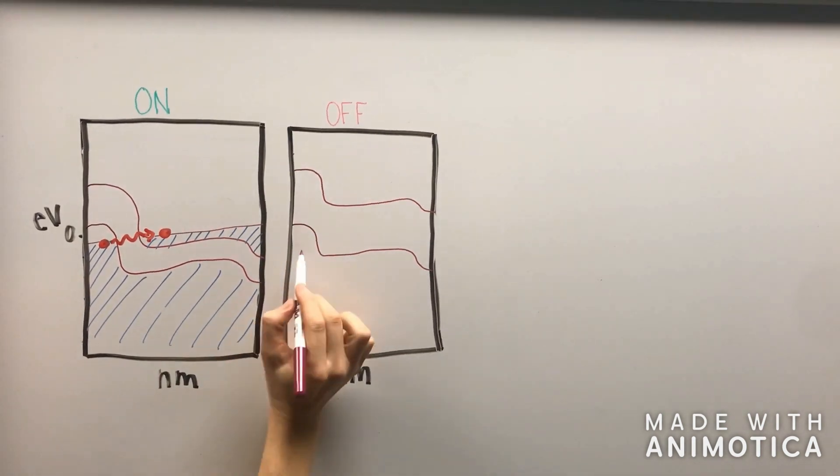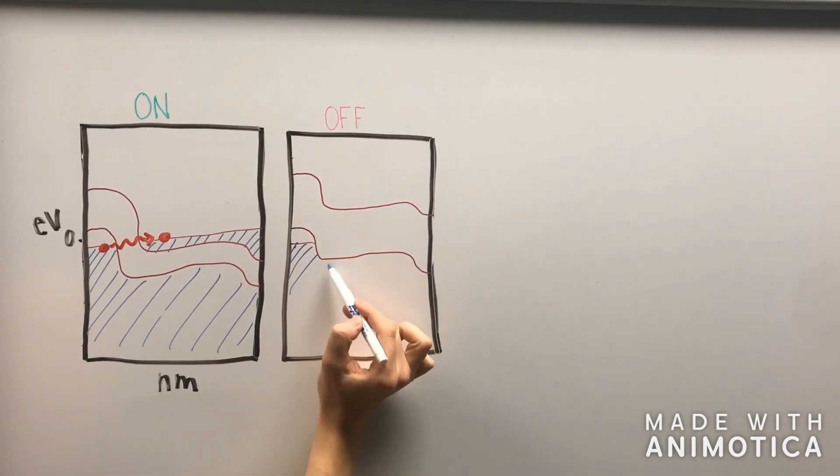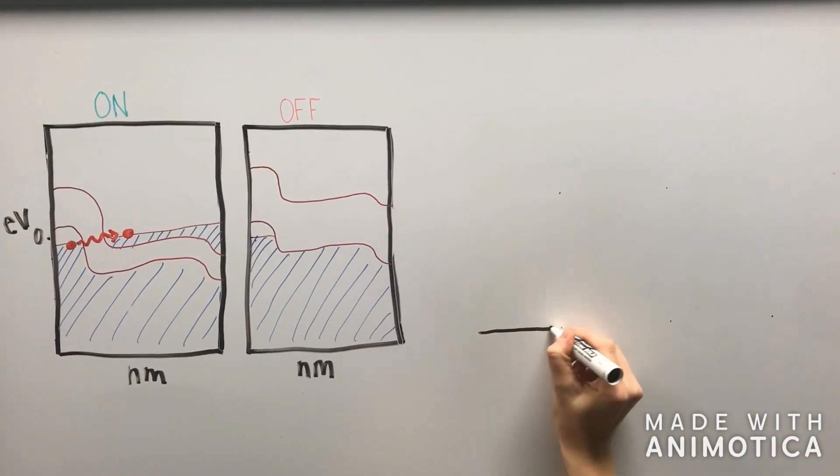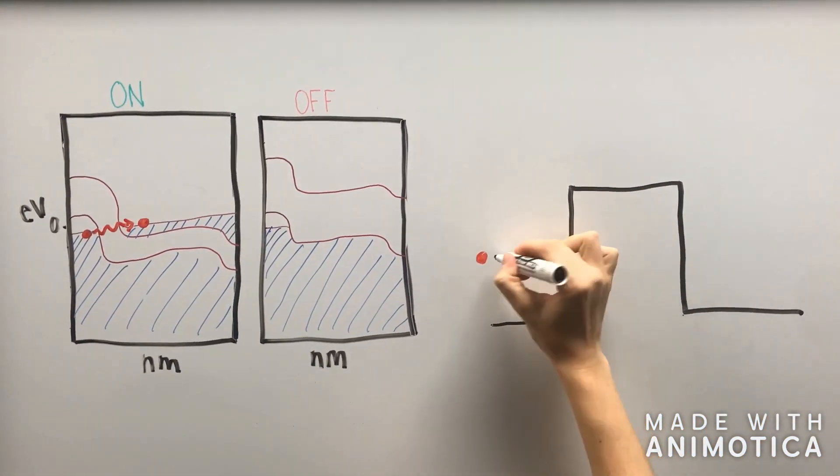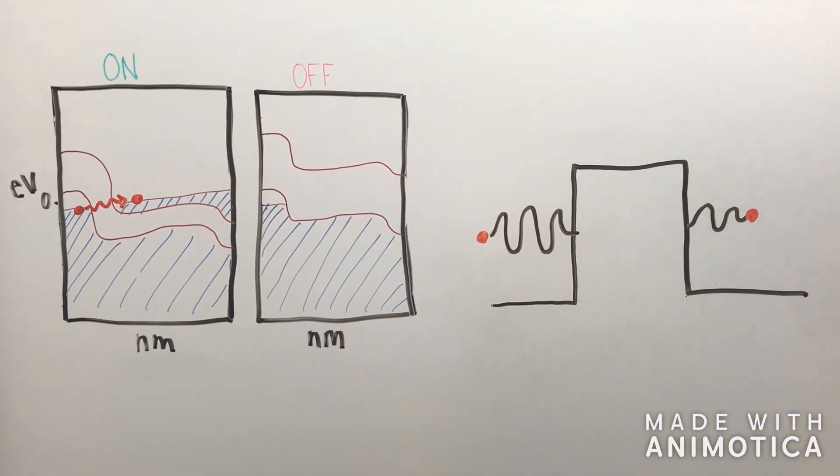When the transistor is turned off, the band energies do not line up in a way that permits tunneling through the gap. For reference, quantum tunneling is when electrons pass through an energy barrier. This happens faster than diffusion, which is the operating mechanism in MOSFETs.